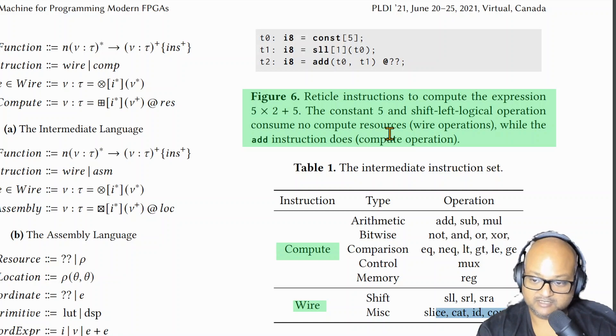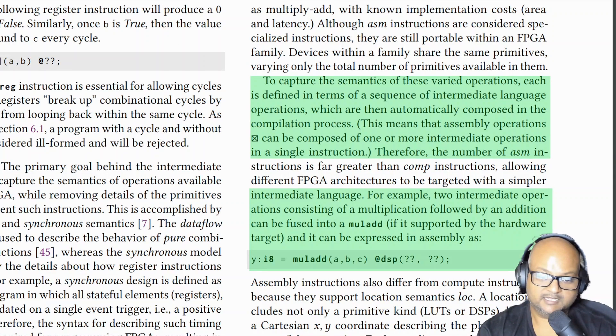Here we see a concrete example of a very simple expression computation. We're trying to compute 5 times 2 plus 5, and so we put 5 into a register, we shift it left which multiplies it by 2, and then we add it to the 5 that we had from before. So that's 5 multiplied by 2 plus 5. And then that intermediate representation gets compiled down to an assembly language which actually maps to the hardware primitives present in the FPGA.